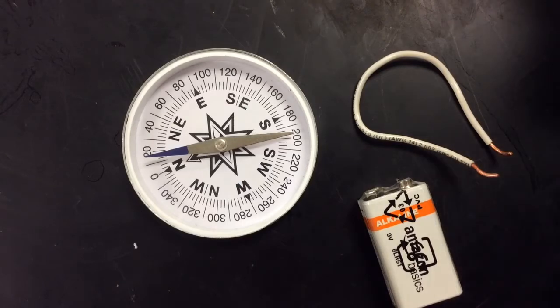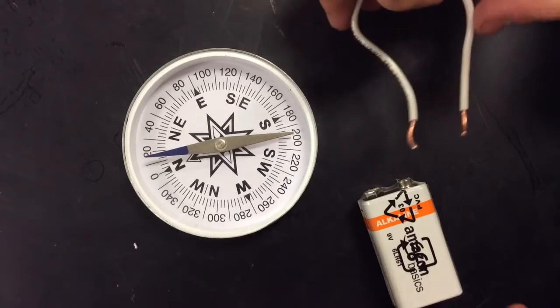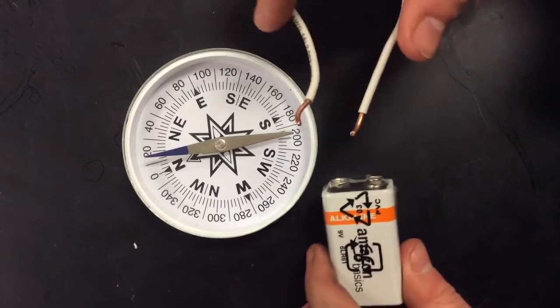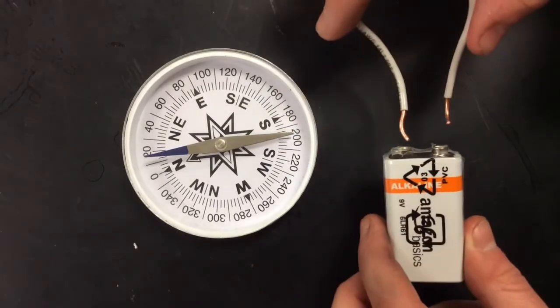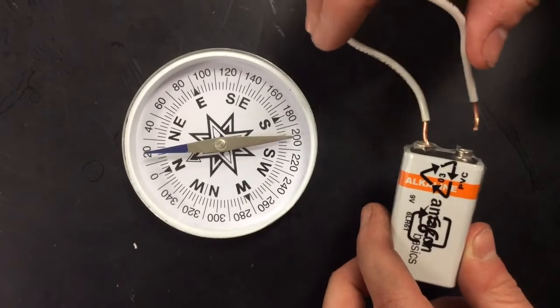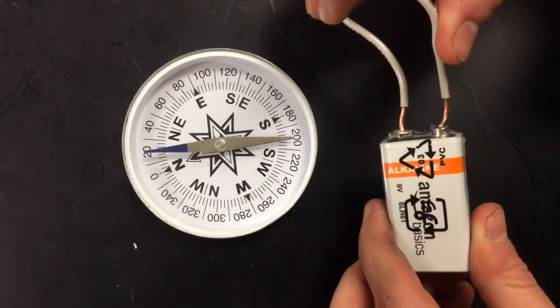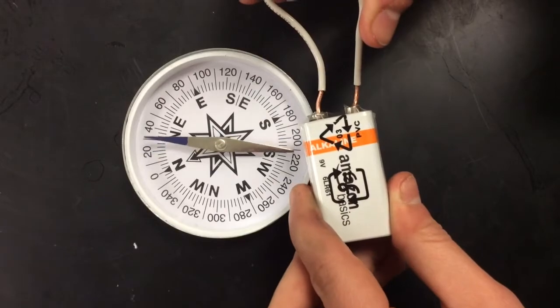I'm going to take my wire and form a complete circuit with my battery. I'm going to do this just briefly, I'm not going to leave it on there. I'll connect to the ends of my battery and then I'm going to hold it near my compass and see what happens.